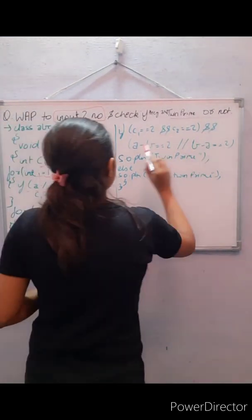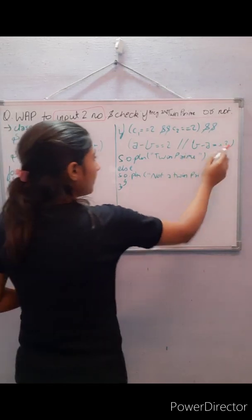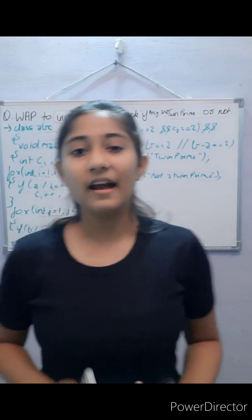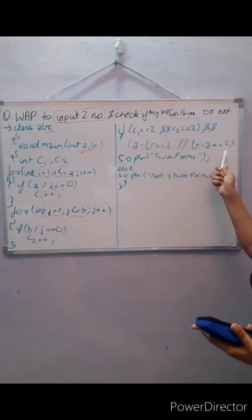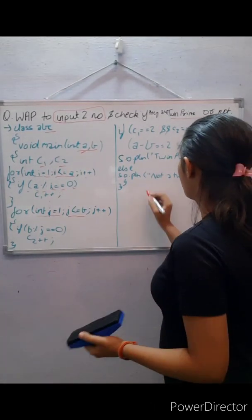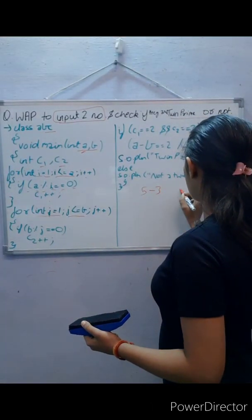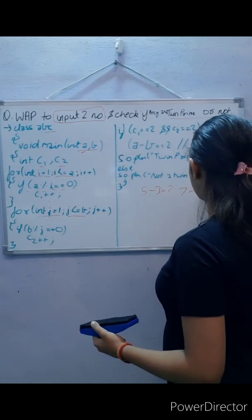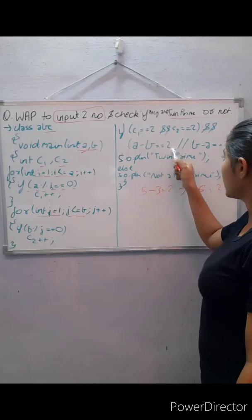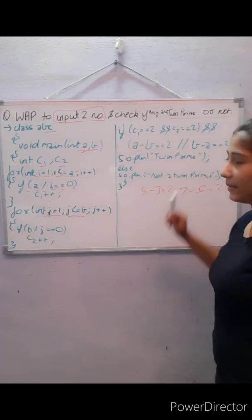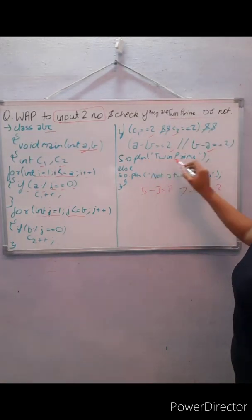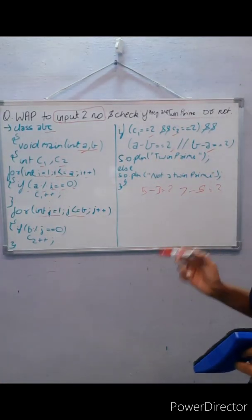The second condition is that a minus b equals two, or b minus a equals two. Since we don't know which number is greater, we apply both conditions to get the difference of two. For example, it could be five minus three or seven minus five. If all four conditions are true, the numbers are twin primes and the program prints 'twin prime'.